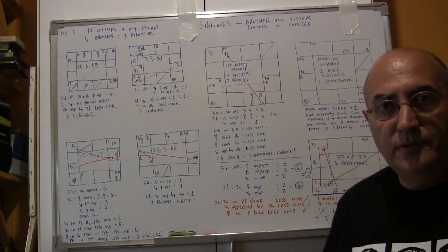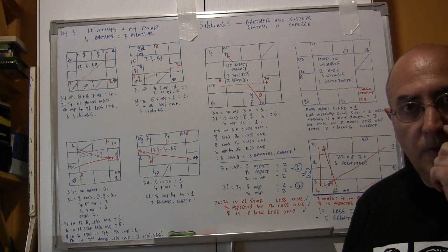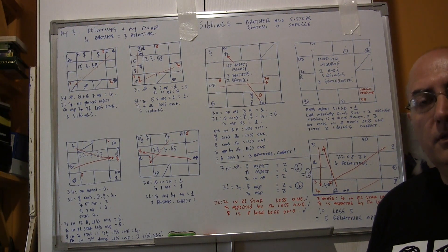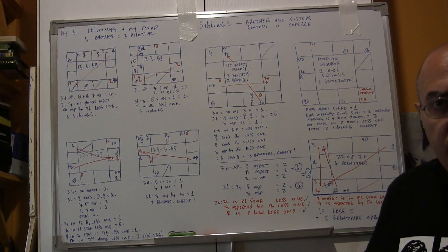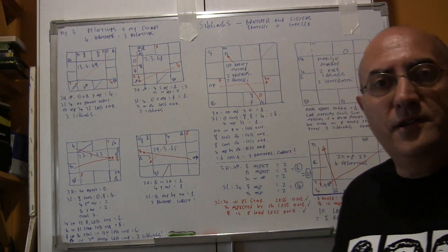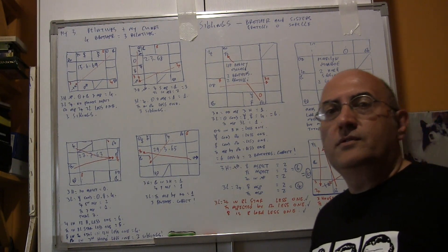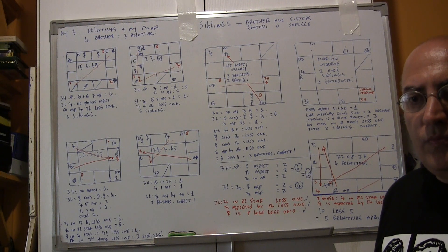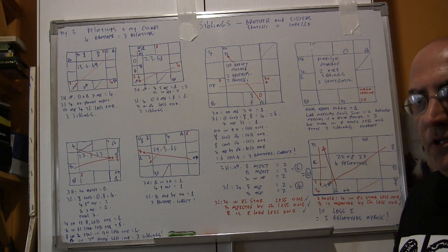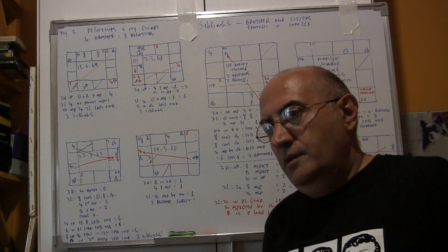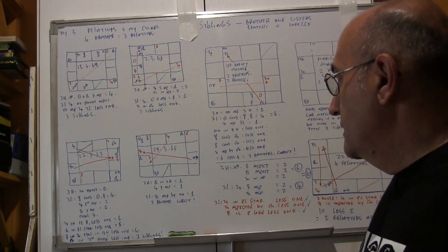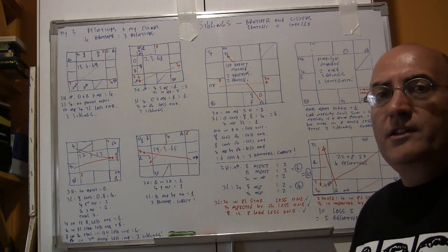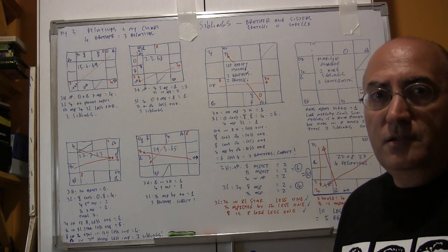Hi, I am Assol Uedio and today I want to show how to find how many relatives one will have. This is also good for the identification of the chart to see if your ascendant is correct. If in the chart the ascendant and other aspects of our life don't have any logic, it means that the ascendant is not correct.